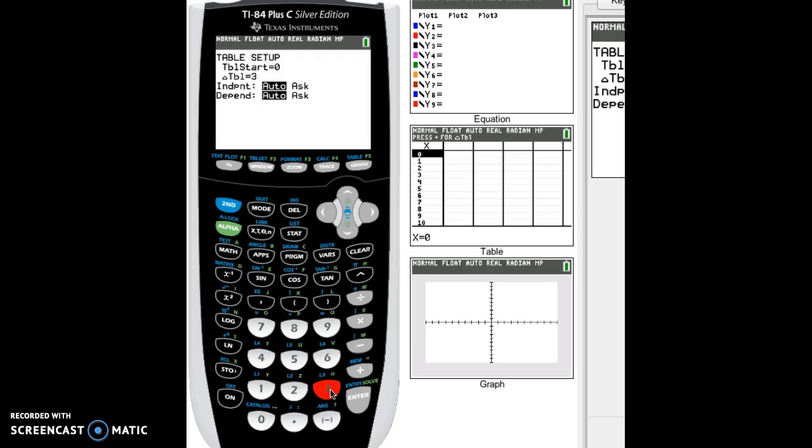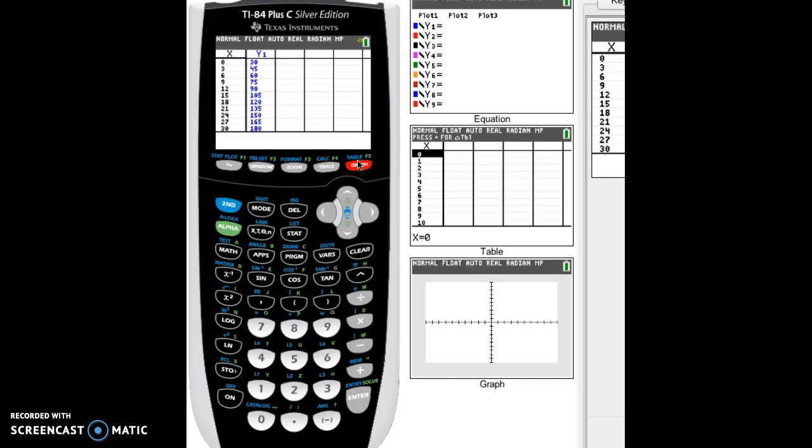And then lastly, to see your table, what you're going to do is hit second graph, second F5. It shows a table and now you can see that what's happening and my X value is counting by three is because I told it to count by three is my Y value is giving the value of Y five X plus 30 every time. So let's go back ahead and mark a couple of those things down on our paper.